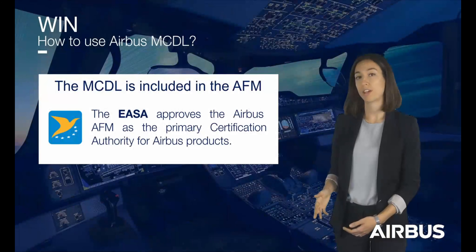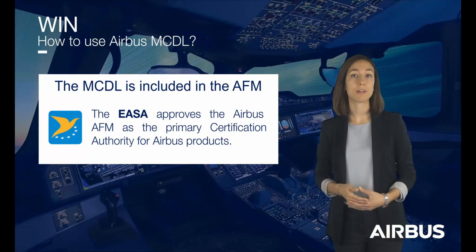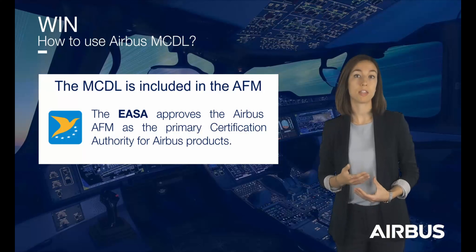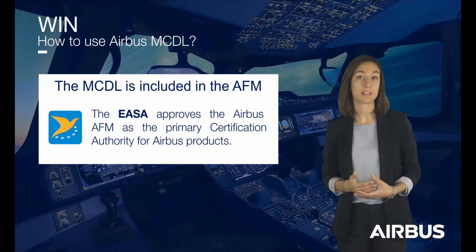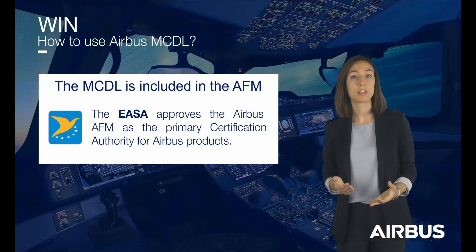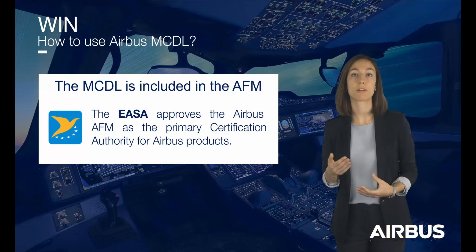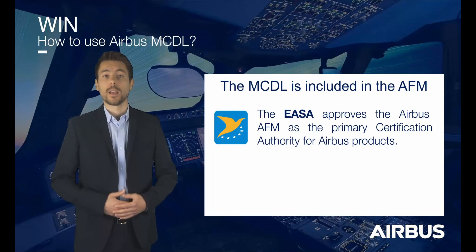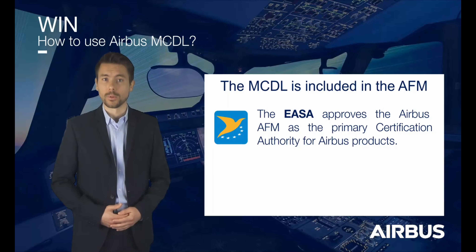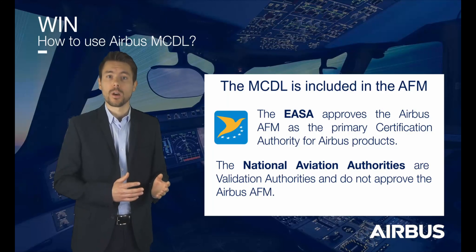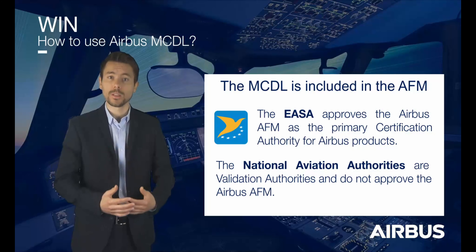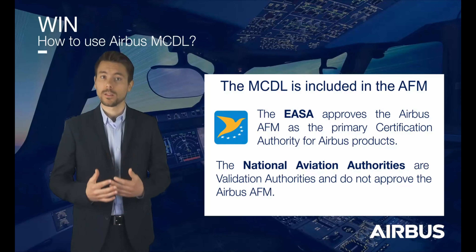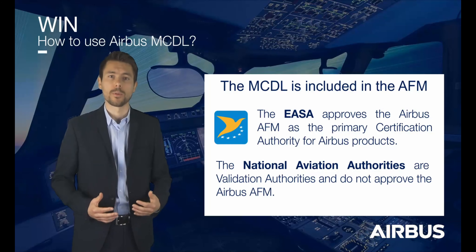The MCDL is included in the AFM for all Airbus aircraft types. The aviation authority that approves the Airbus AFM is the EASA, as the primary certification authority for the European aircraft manufacturers. So the MCDL is a section of the AFM and therefore it follows the same principle. National aviation authorities can review the AFM, but they do not approve the AFM as they are only validation authorities and not certification authorities for Airbus products.